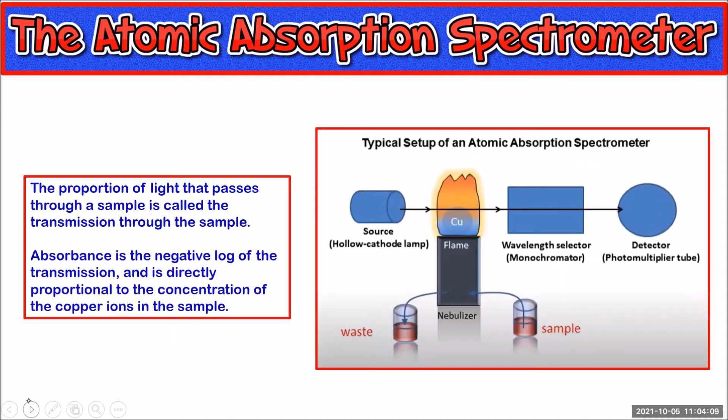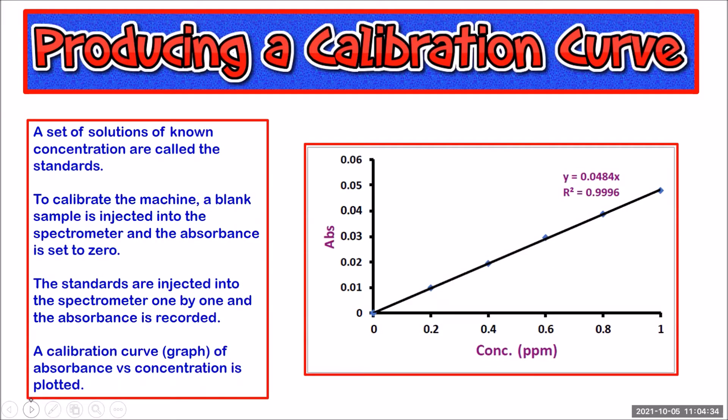The proportion of light that passes through the sample is called the transmission. Now absorbance is the negative log of transmission and absorbance is directly proportional to the concentration of the copper ions in the sample. You need to make a set of solutions of exactly known concentration. So if we were doing a copper analysis, you'd need to make a set of solutions with copper ion concentrations in this graph here of 0.2, 0.4, 0.6, 0.8 and 1 parts per million. Parts per million is also milligrams per liter.